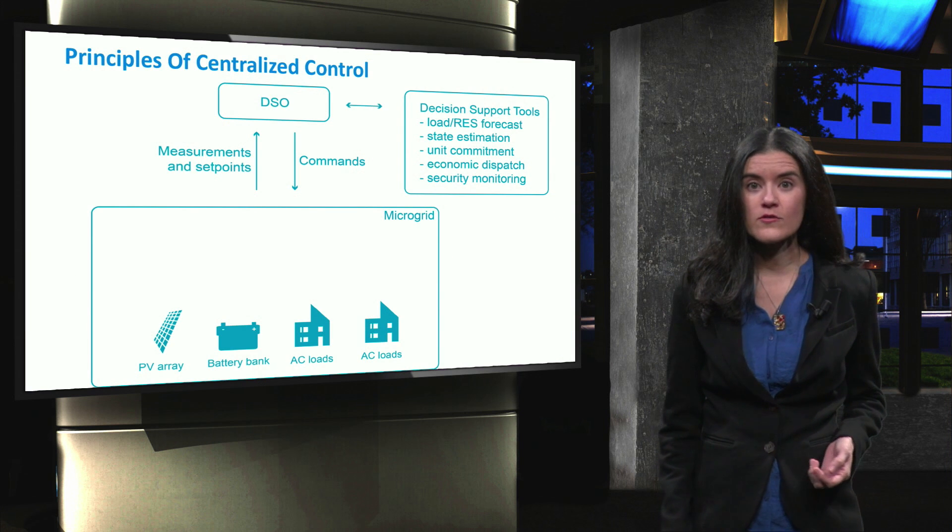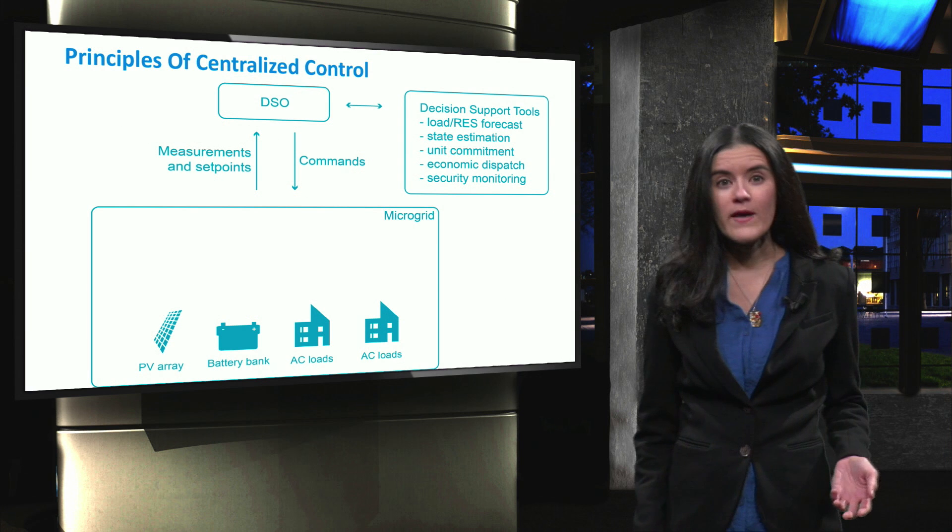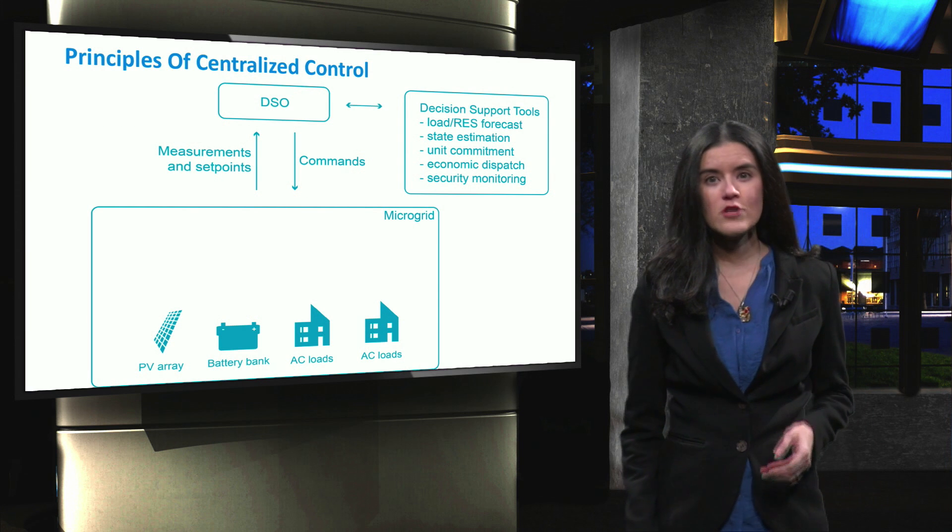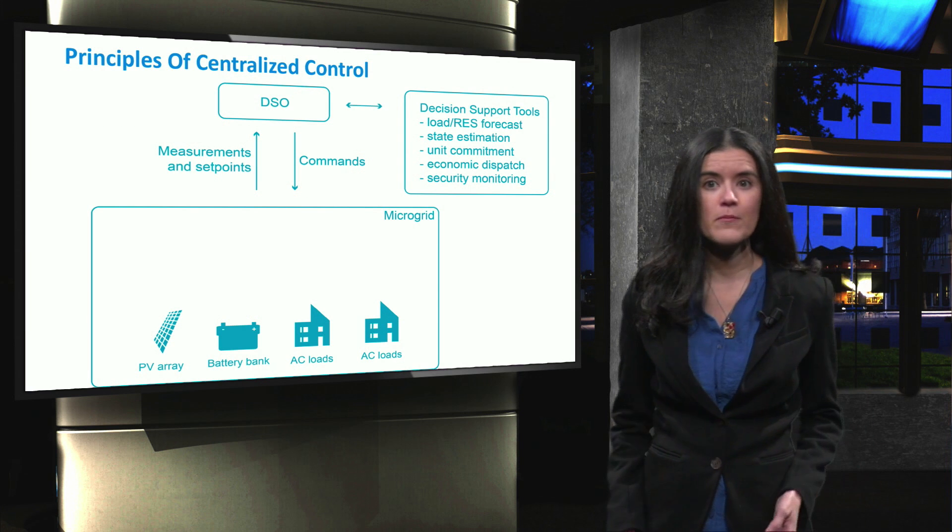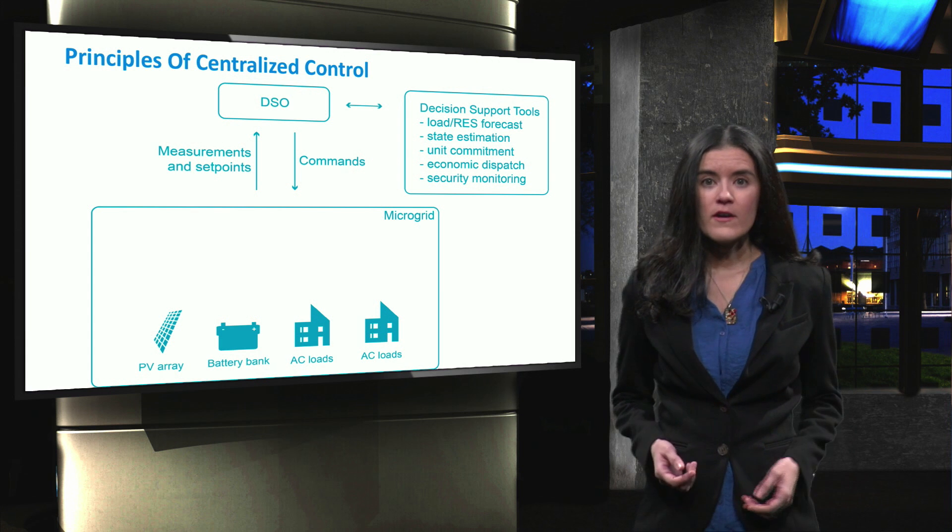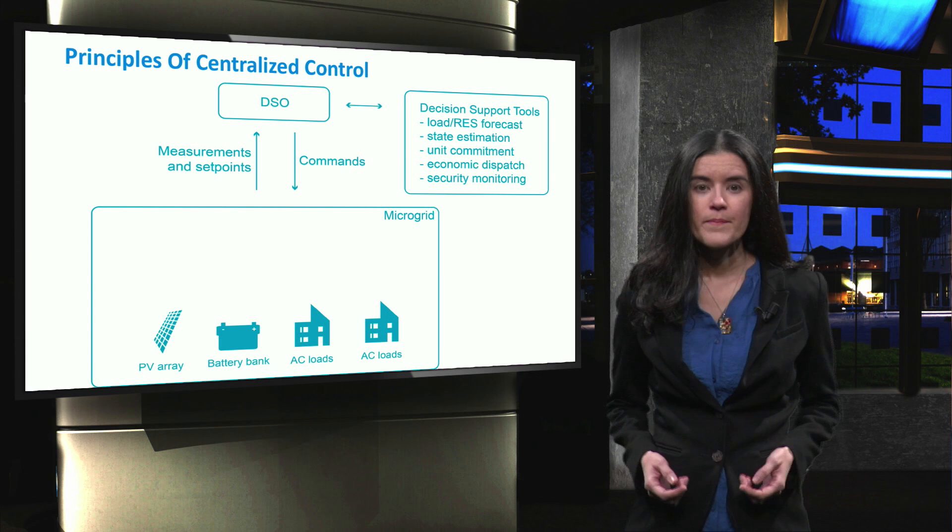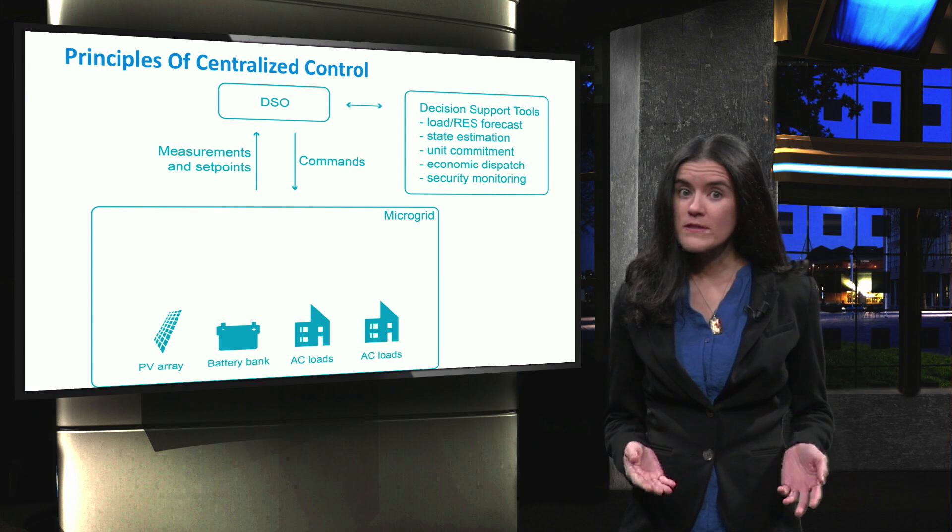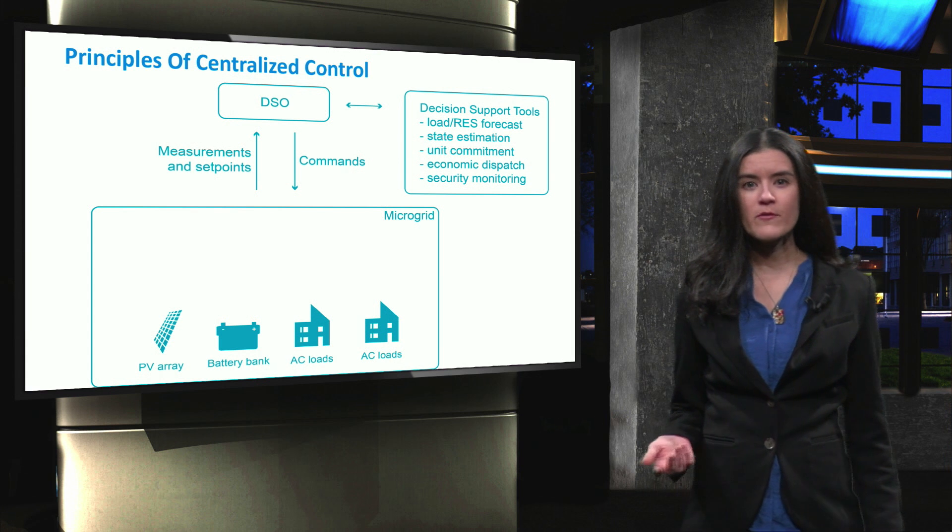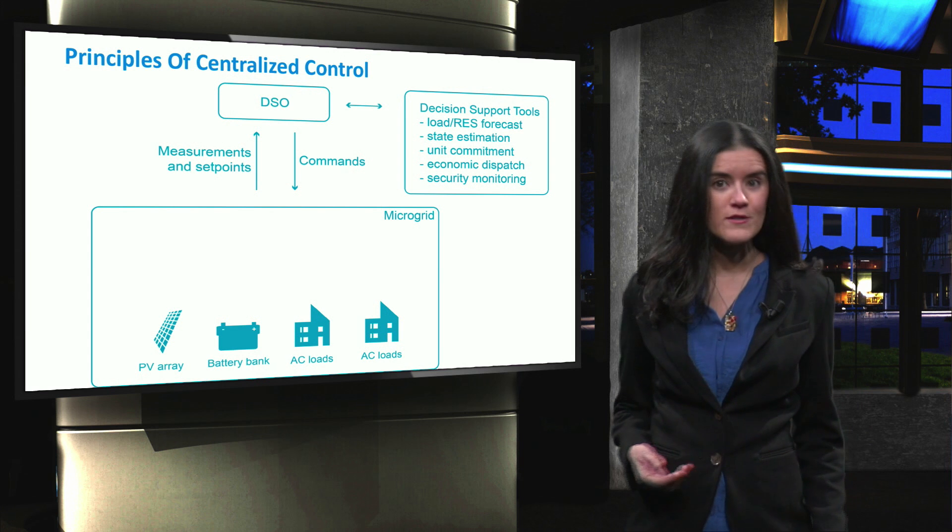When the internal microgrid control is performed in a centralized way, a single entity is in charge of carrying out the decision-making processes. This kind of architecture is suitable when all actors in the microgrid have common goals. In conventional power systems, centralized control is generally performed by a single entity at the transmission system operator level.